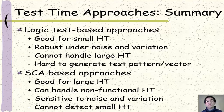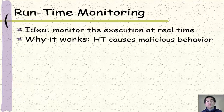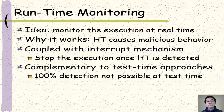In addition to test time hardware trojan detection, we can also catch hardware trojans at runtime. The basic idea is to monitor the execution of the system in real time. If the system has a hardware trojan and it gets activated, we can find the malicious behavior. In this case, most likely there will be an interrupt mechanism coupled with the runtime monitoring system. Once the hardware trojan is detected, the interrupt mechanism will stop execution to protect the system. Since at test time we cannot detect all hardware trojans with 100% guarantee, runtime monitoring is a very good complementary approach.